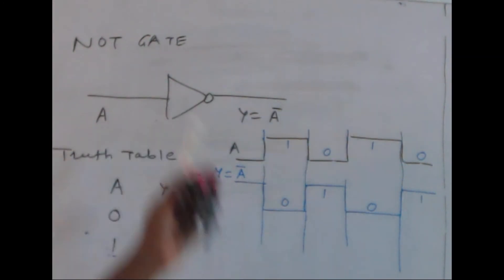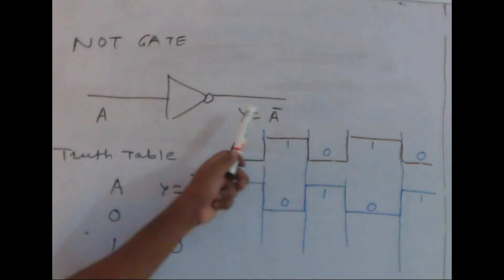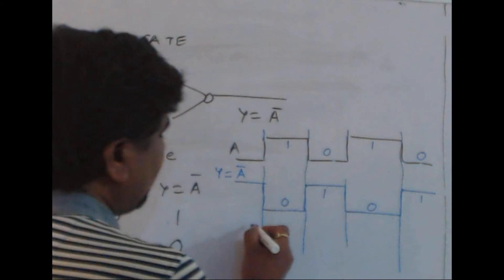Subsequently, we need to understand what is present inside this - the switch level design. The truth table shows that whenever A input is 0, output equals 1; when A input is 1, output equals 0. But practically there will be some propagation delay.